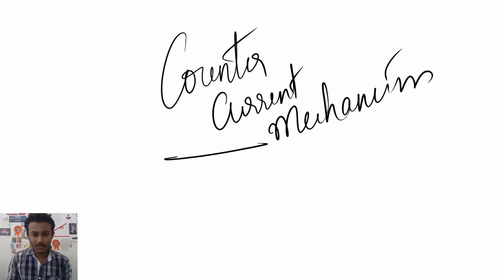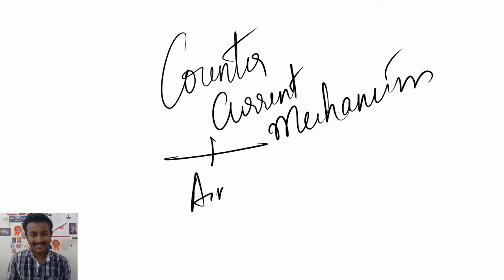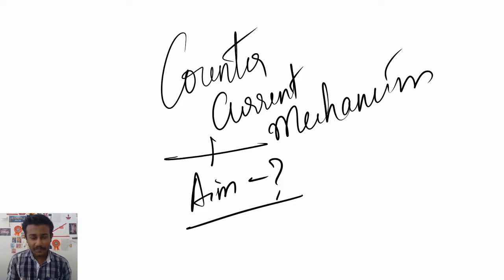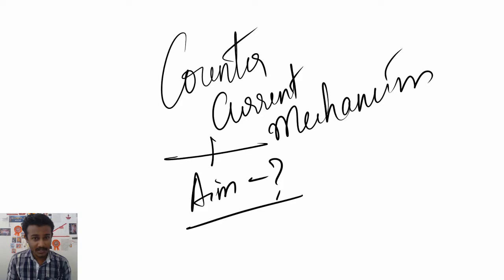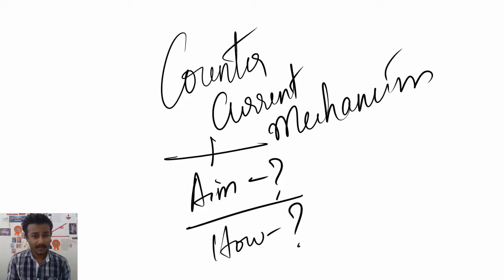First we should know what the counter-current mechanism is trying to accomplish. We look at the aim first - what is it trying to accomplish - and then we look at how it accomplishes it. First we look at what it's trying to do, then we'll see how it does it.